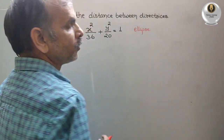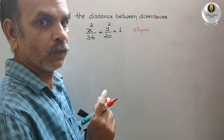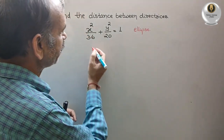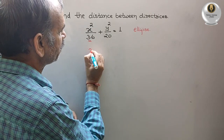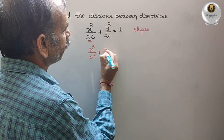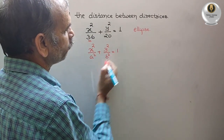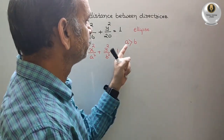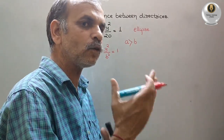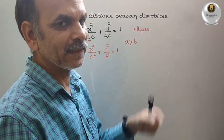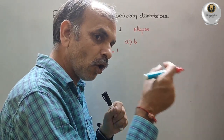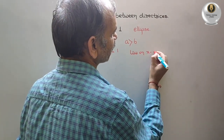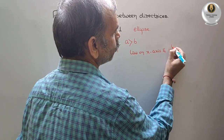So what is the distance between two directrices — that we have to find out. If we know the equation of directrix, the standard form is x² / a² + y² / b² = 1. Here 36 is greater, that means a is greater than b. Therefore, the directrix lies on the x-axis and is parallel to the y-axis.